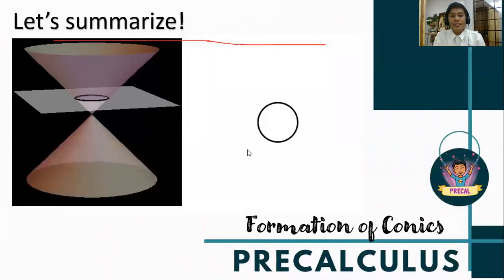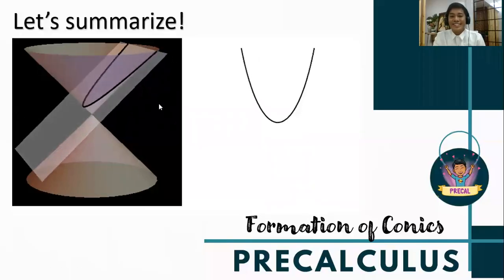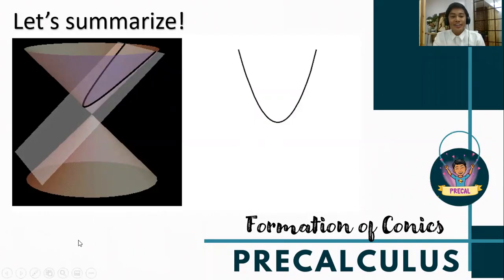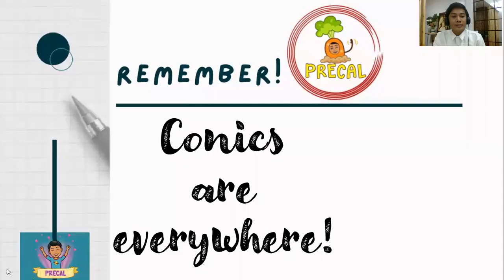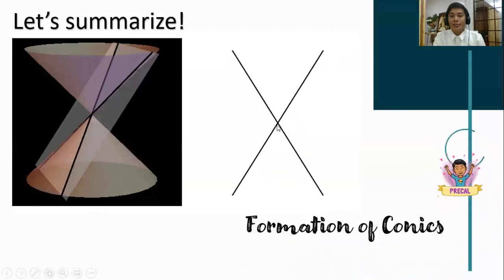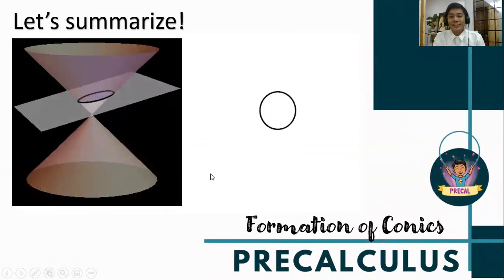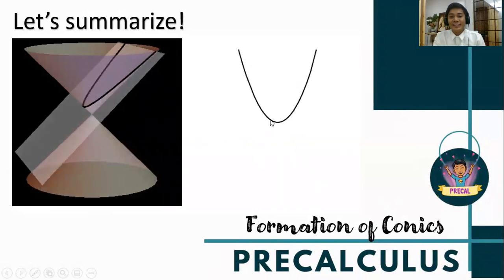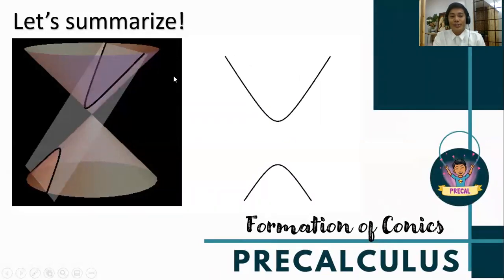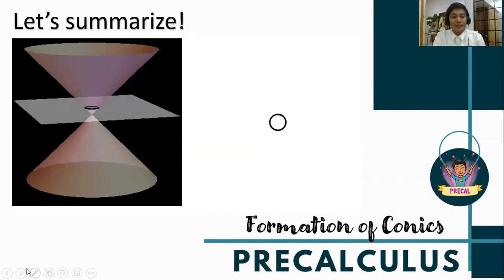Let us summarize everything that we have talked about. Observe how the figure changes from a conic, degenerate conic, and a non-degenerate conic. We have the hyperbola, two intersecting lines, the line, the point, a circle, the ellipse, and the parabola. You could see how the intersection of the plane changes the geometric figure.